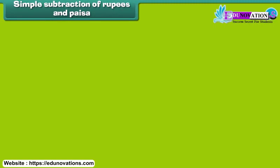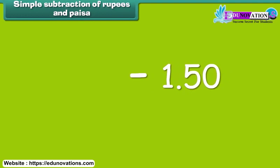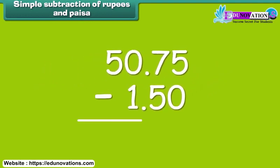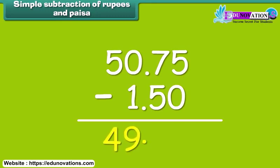Subtraction of rupees and paisa is simple. Subtract 1 rupee 50 paisa from 50 rupees 75 paisa. We first subtract numbers in the paisa column and then in the rupee column. So, the answer is 49 rupees and 25 paisa.